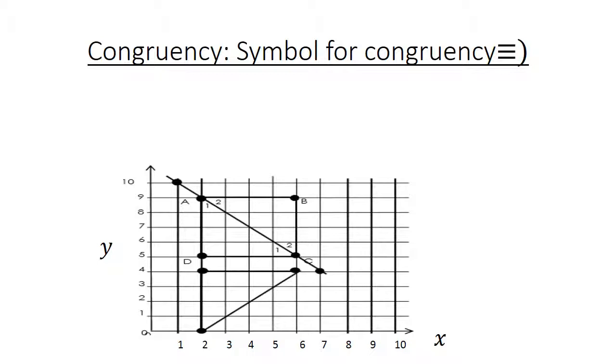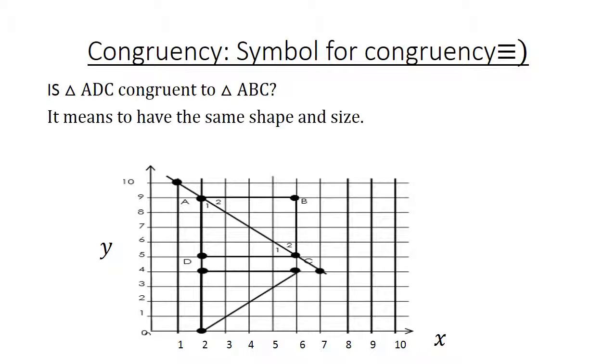Congruency, the symbol for congruency, there we see it, it's three lines. It means, is triangle ADC congruent to triangle ABC? It means to have the same shape and size.